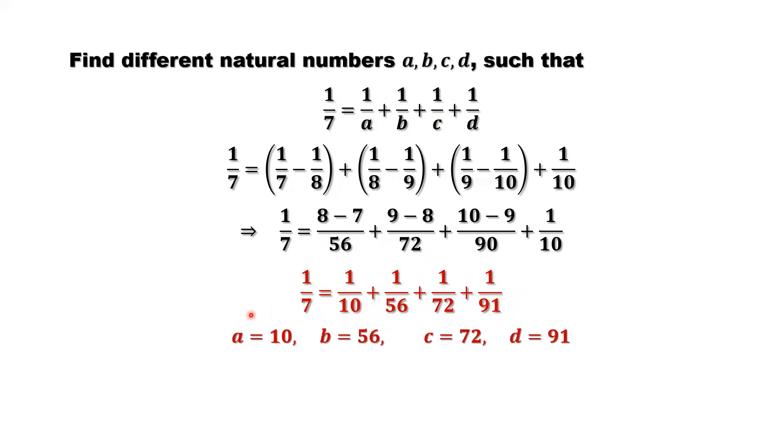This is the answer. a equals 10, b equals 56, c equals 72, d equals 91. Those are positive integers. They are different and satisfy the requirement for this equation.